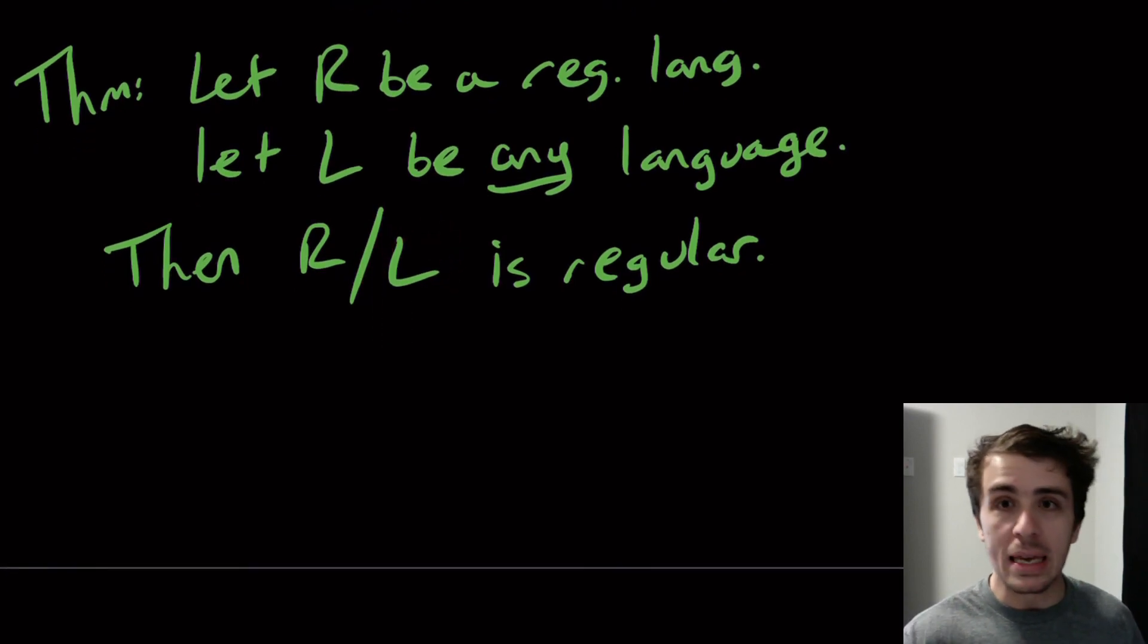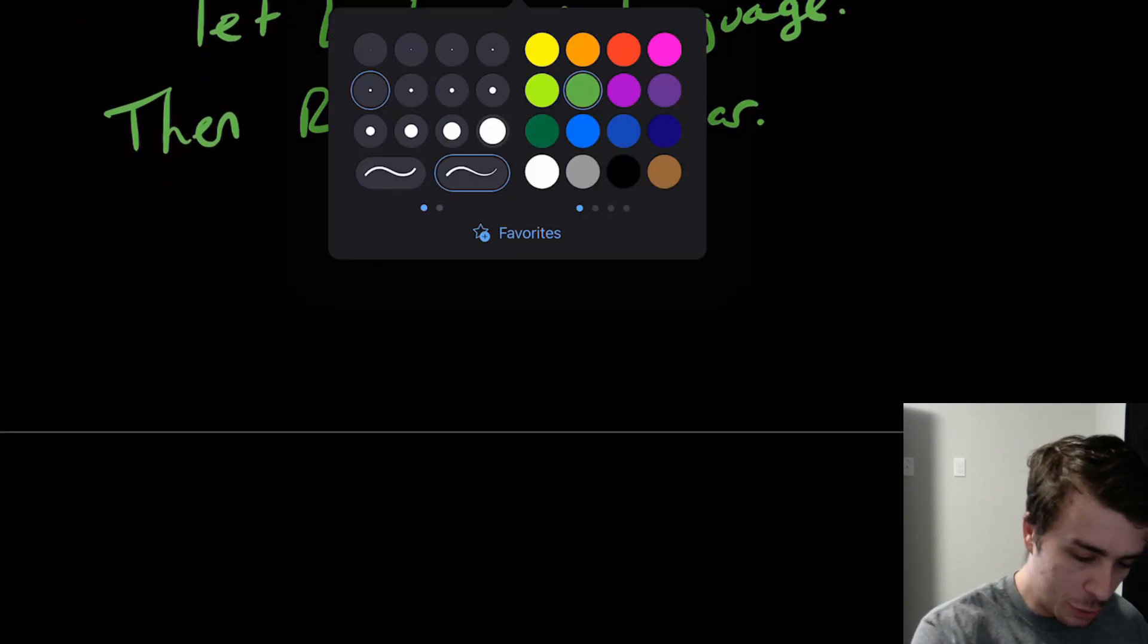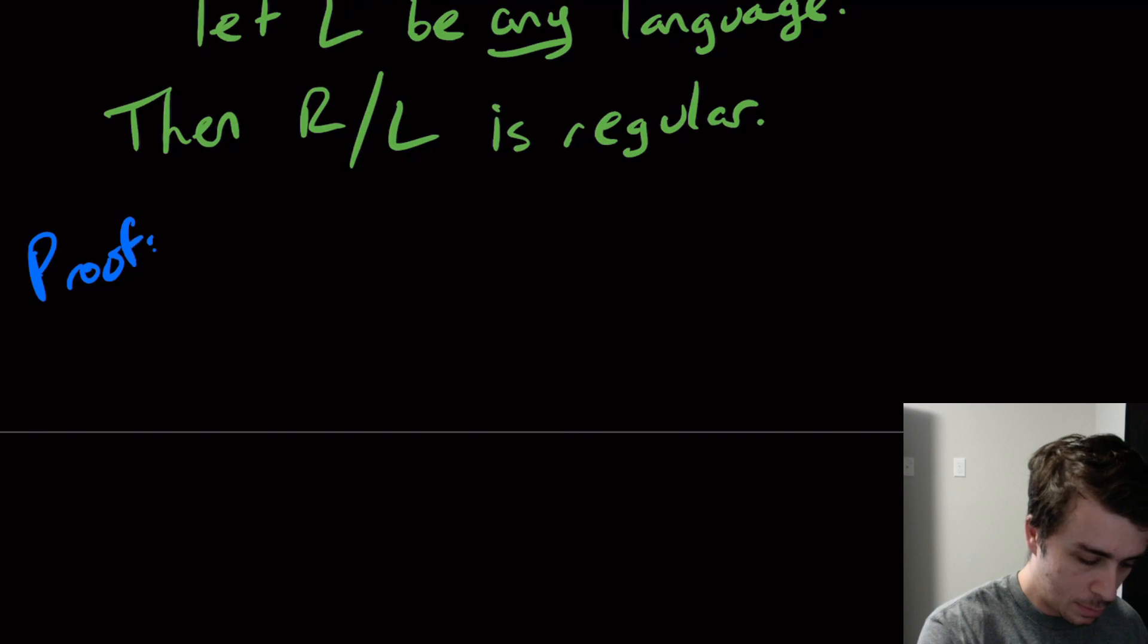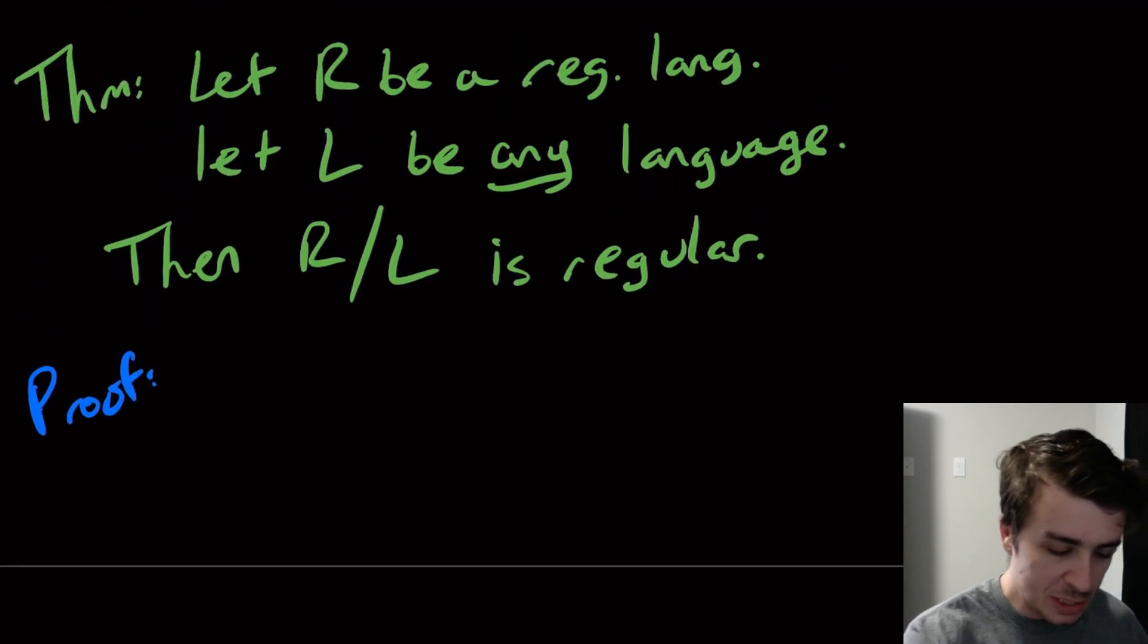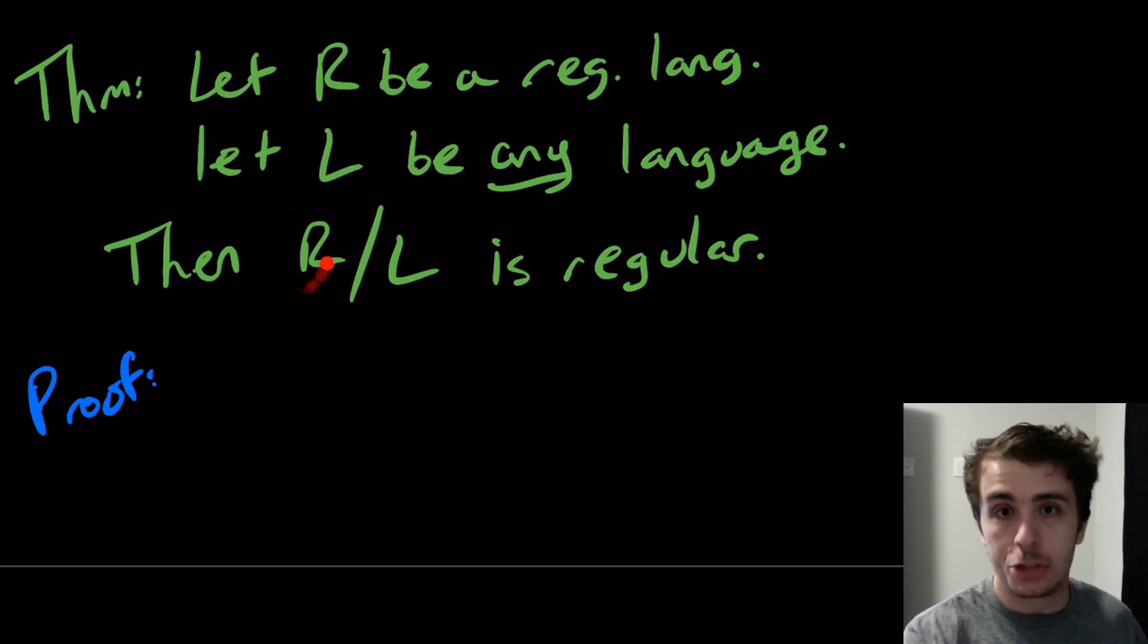This is actually a really interesting example because it tells us that we can show this by producing a DFA for it, but not knowing any properties of the DFA at all. I can assert that there exists a DFA for it but I can't actually produce it for you. Here's how we're going to prove this. Remember the division operation says look at some string, like any string in this regular language, and we're going to see if there is a suffix of that string that belongs in L. Then we'll just take the first piece of that string.